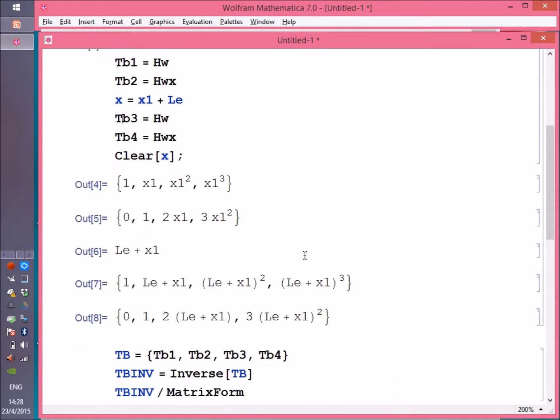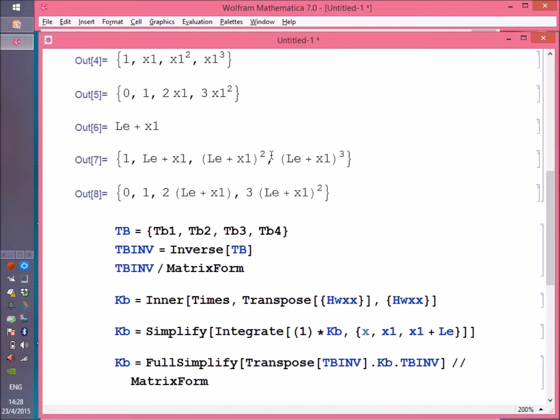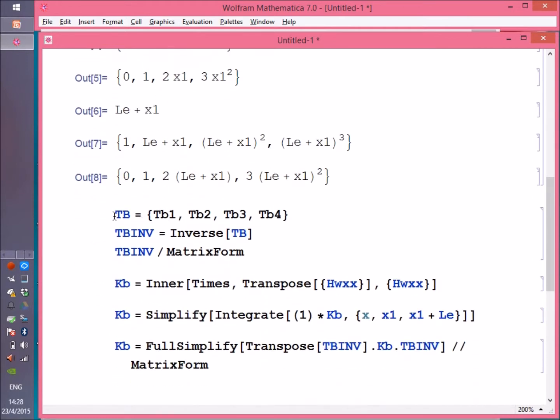So this is the transformation matrix that I use in bending problems. Here you are, you get TB. That's it, the four vectors.